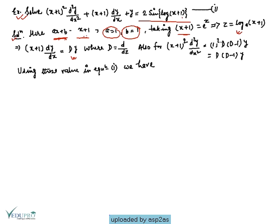Using the method, (x+1) dy/dx = Dy and (x+1)² d²y/dx² = a²D(D−1)y. Since a = 1, this equals D(D−1)y. We now substitute these values into the equation.